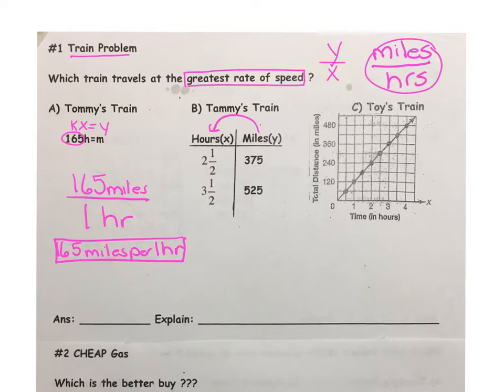Let's take a look at case number two, Tammy's train. We can see we've been given some mixed numbers in the hours column. Well, we certainly know that the fraction one-half is equivalent to 0.5. So we can rewrite each of these in decimal form: 2.5 and 3.5. Now, let's calculate the rate for each of these by placing y over x. 375 divided by 2.5, and just to check it, 525 divided by 3.5. Go ahead and take a moment and punch each of these into your calculator.